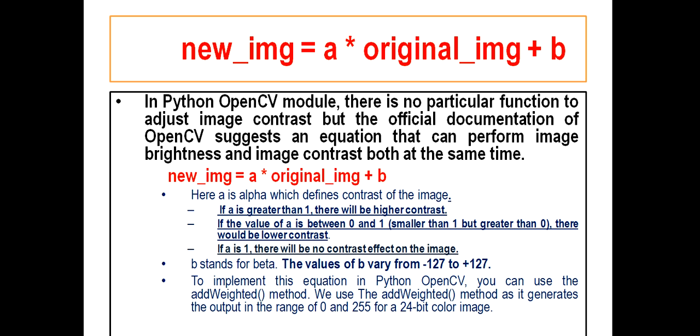So B stands for beta, and its value varies from minus 127 to plus 127. Now to implement this equation in Python OpenCV, we can use the add_weighted method.